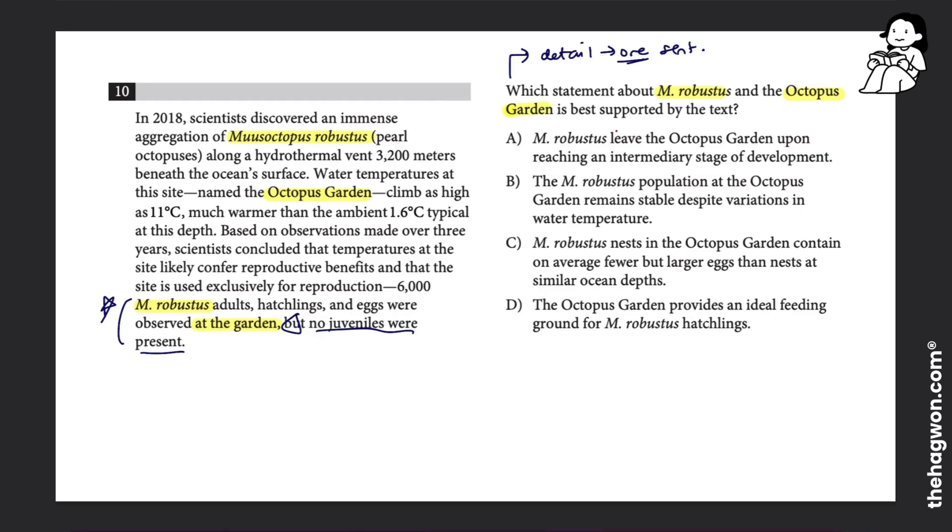Having read that, I'm going to go over to my answer choices. Answer choice A says M. Robustus leave the garden. So that means if they leave, they're not at the garden.